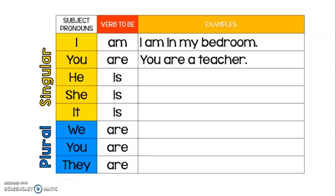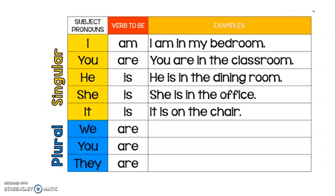Here we are with examples. I am in my bedroom, using the singular form for the subject pronoun I. Then we have: you are in the classroom. With third person singular: he is in the dining room, she is in the office, it is on the chair.